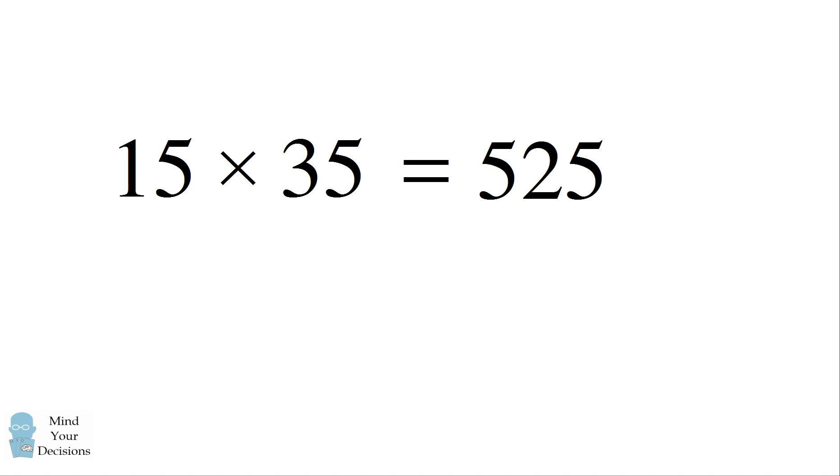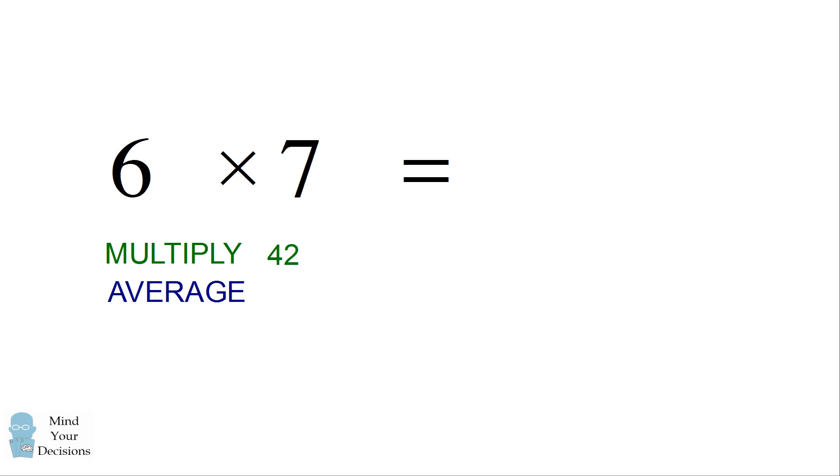Let's do another example of this technique. Let's say you want to multiply 65 by 75. Both of these numbers end in the digit 5, so we can cover up the digit 5. We now want to multiply these digits to get 42, and we take the average, which is 6.5. Adding this together we get 48.5.